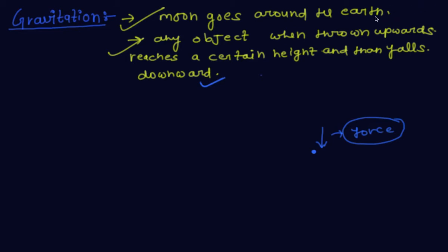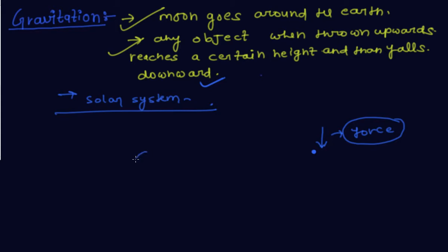One more activity: in our solar system, all the planets go around the Sun. So we can say there exists a force between the Sun and the planets.